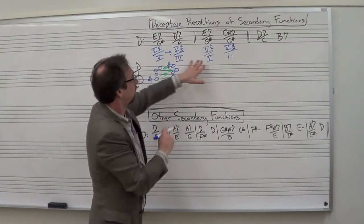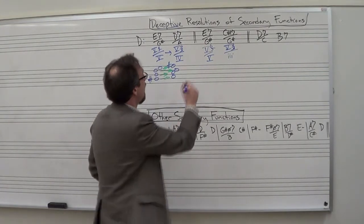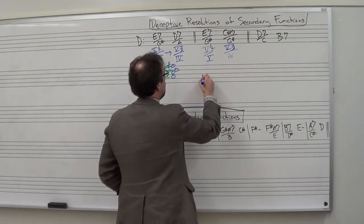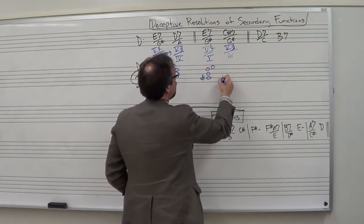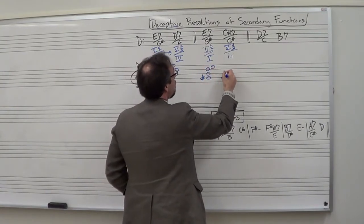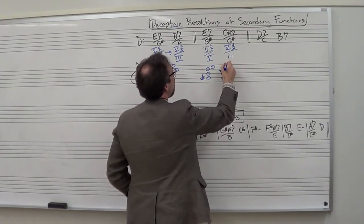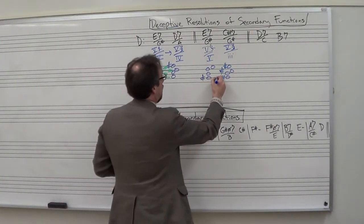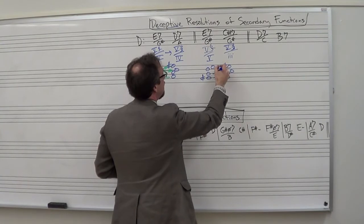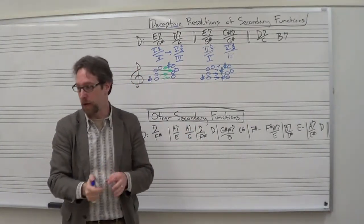Again, it's a 5-6-5 of 5 that doesn't resolve as expected. But let's see how that would look. We take our same chord, G-sharp, B, D, E, and we say, well, we're going to keep the G-sharp. We're going to keep the B. The D will move down to C-sharp. The E will move up to E-sharp. So common tone, common tone, down by step, up by step. Smooth voice leading.